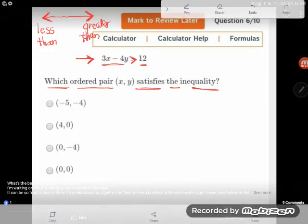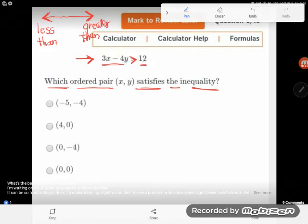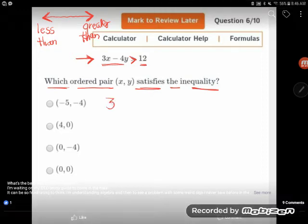So I'm saying here that I want 3x minus 4y to be greater than 12. That's what this inequality says. And so it says, which of these satisfies this inequality? Well, in order to figure out if it satisfies it, that means it makes it true. We're going to have to plug these values in. So let's give it a try.